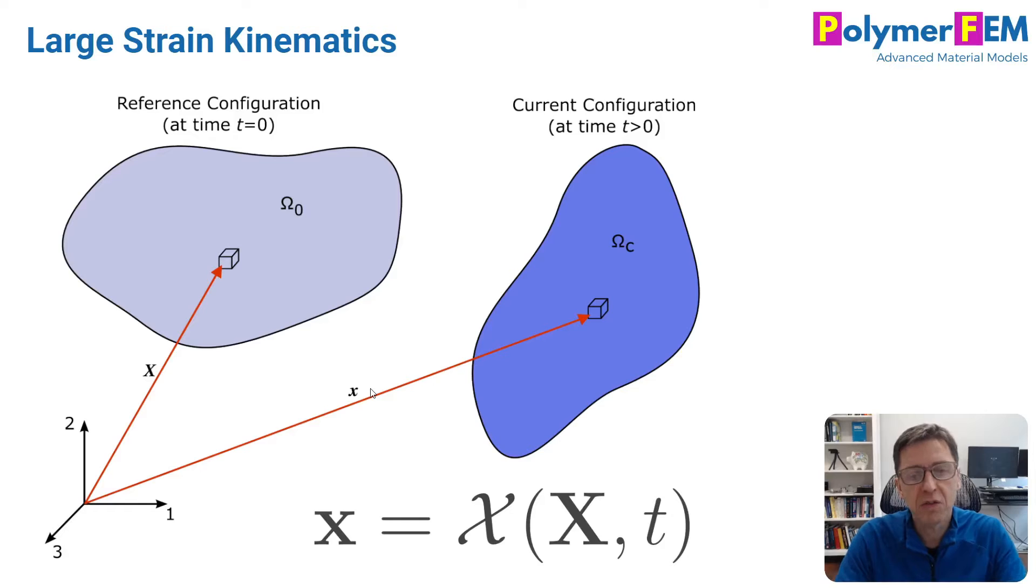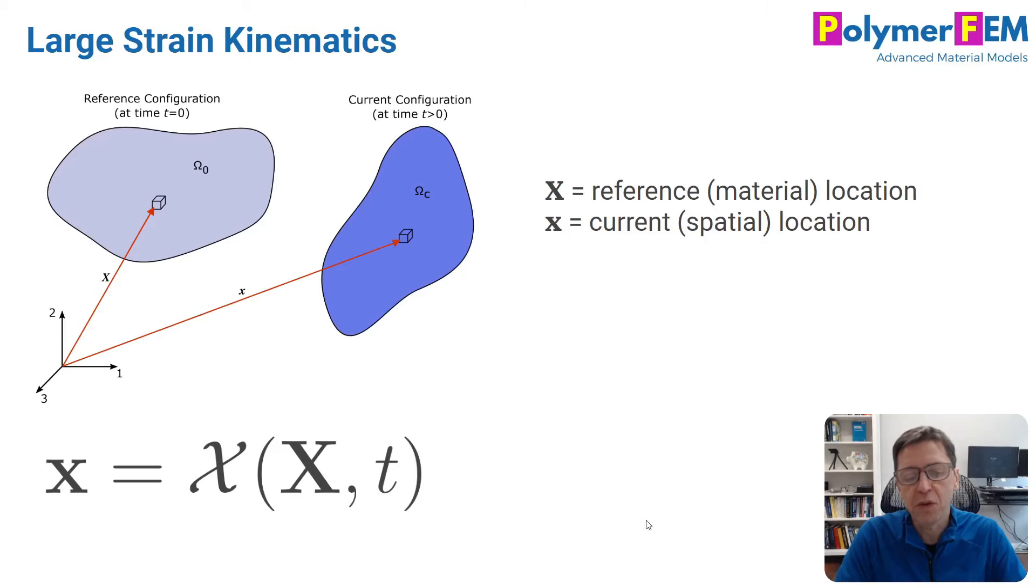This is basically kinematics. We can write a function that says the current location of an object is given by this function x, which is a function of capital X and time. This is very useful. Capital X is the reference location, sometimes called the material location, and the current location is lowercase x, also called the spatial location of this point that we're interested in.